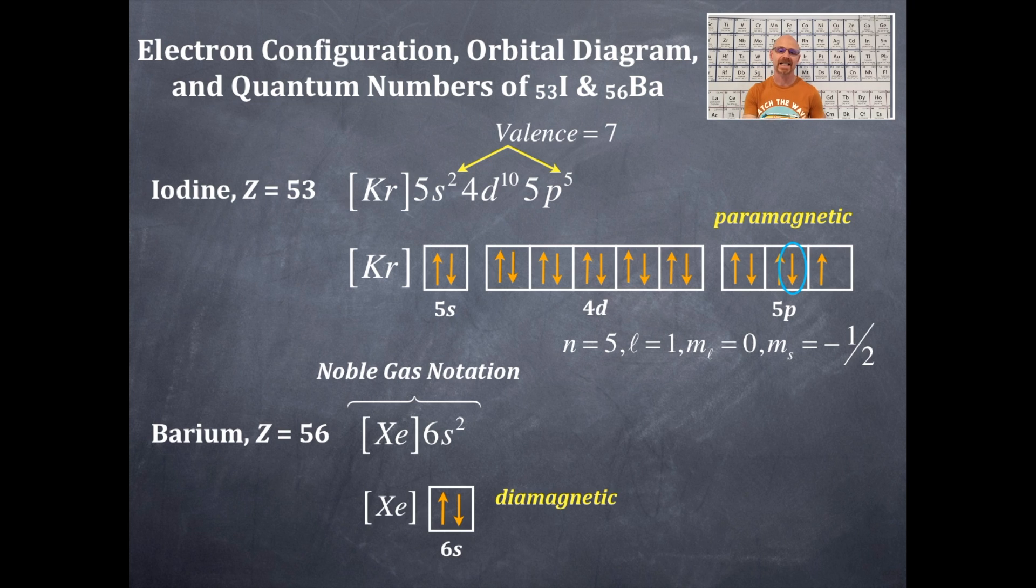This is diamagnetic. So at the end of each of the s, the p's, the d's, and the f's, they're all diamagnetic once they are filled in all the boxes completely. That is, barium is not attracted to a magnetic field.